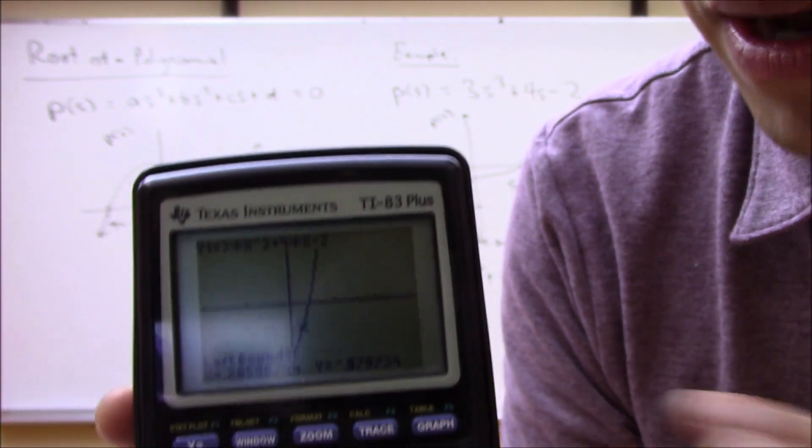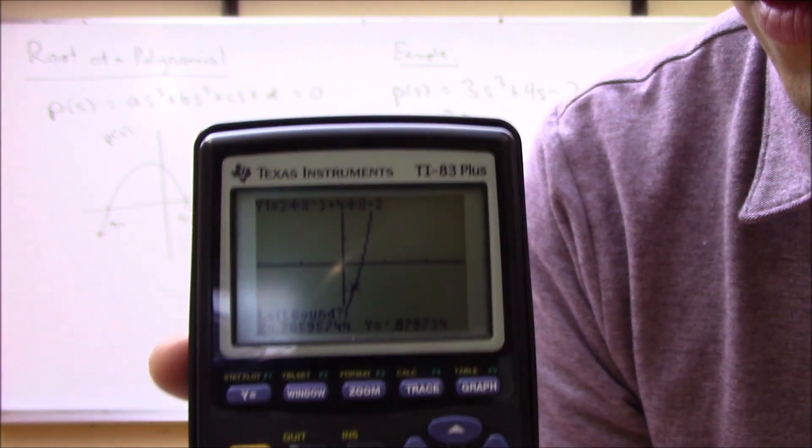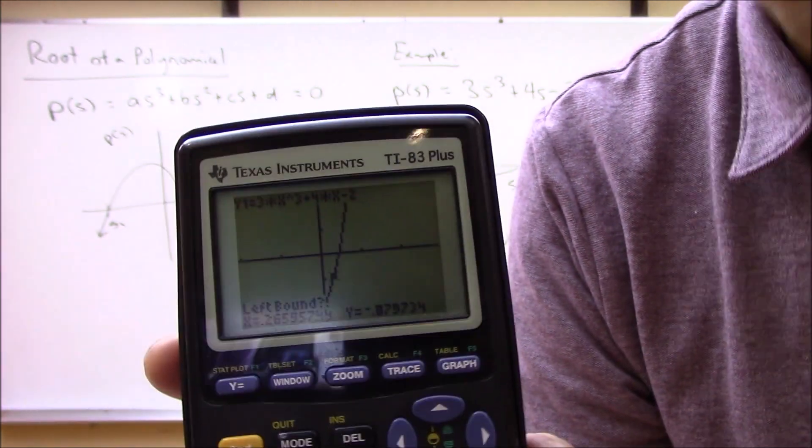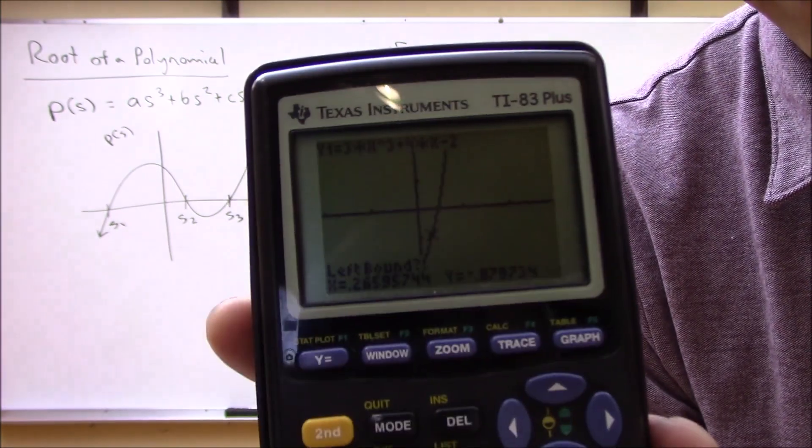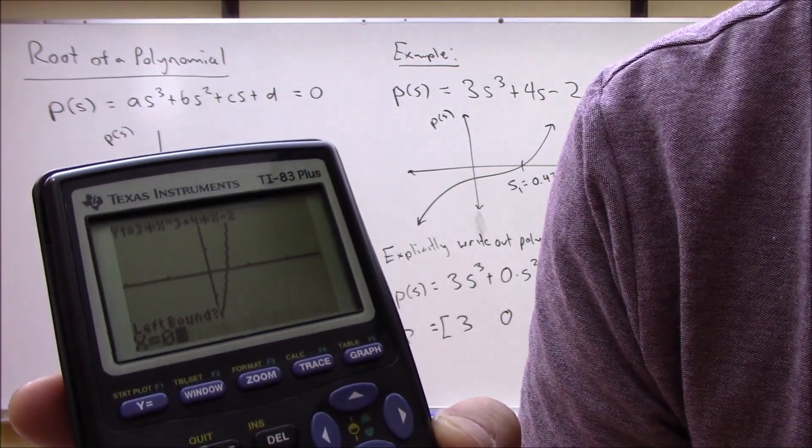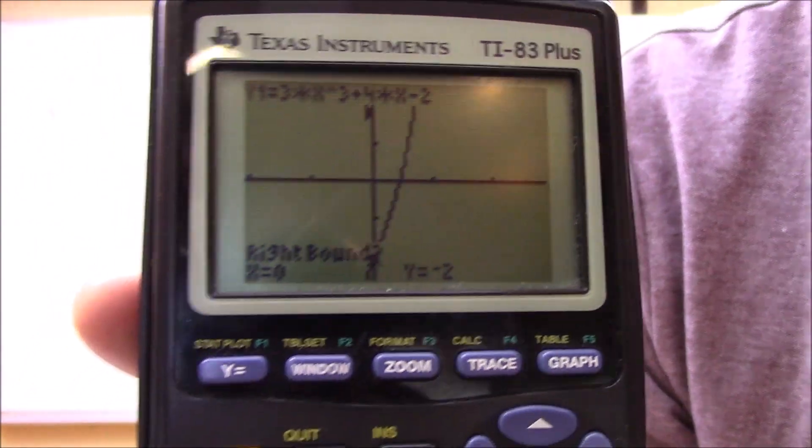So I'll hit zero, hit enter. What you have to do now is you have to give it a guess. You have to give it a left bound and a right bound. So you want to figure out one value where it's below or above the x-axis and then another value where it crosses the axis. I don't know, let's try here at how about zero, so I'll give the left bound of zero and the right bound of I don't know two or something like that.